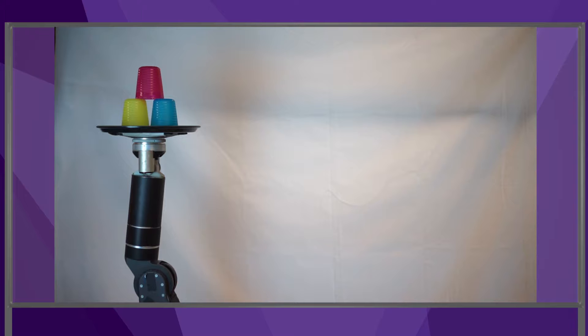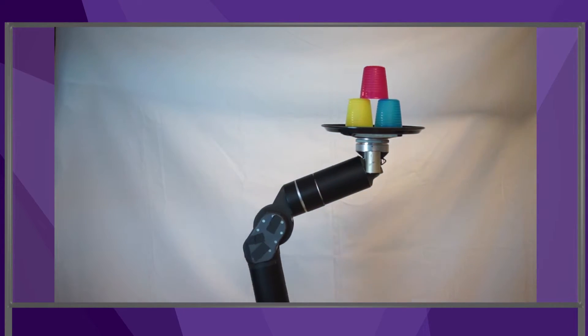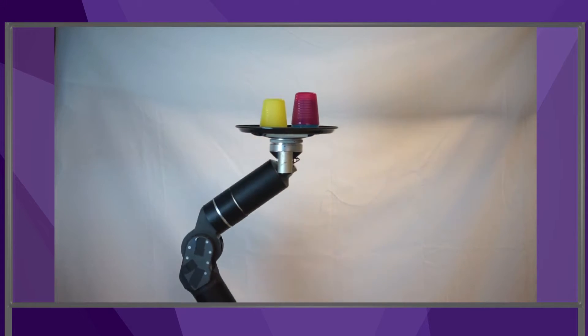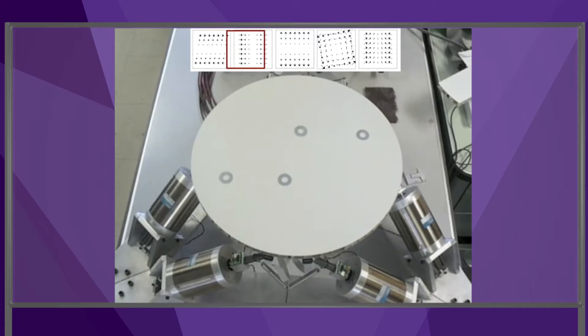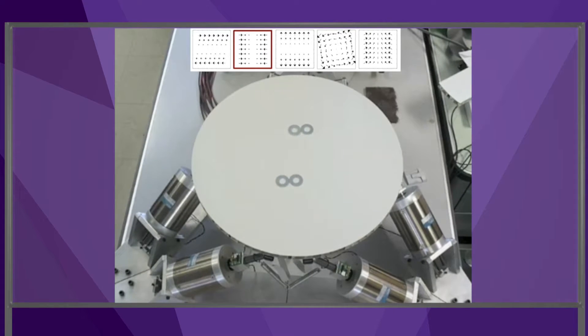If a robot waiter carries a tray of glasses, it needs to know the motion constraints that keep the glasses from falling. Also, a robot that can reason about friction can use vibration to manipulate several sliding parts on a flat plate.